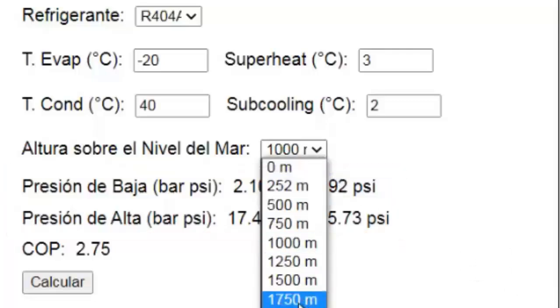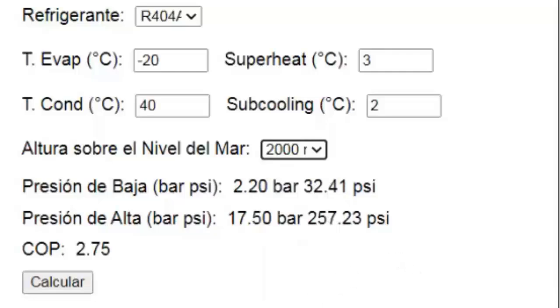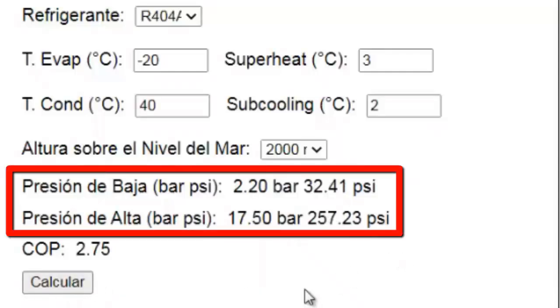For instance, at 2,000 meters above sea level, the low and high pressures change according to the values shown in the diagram.